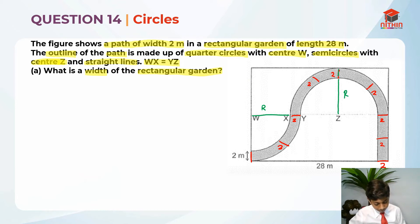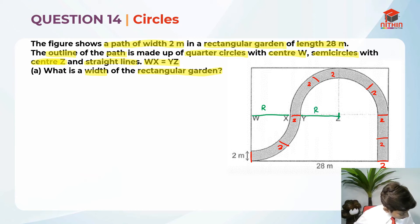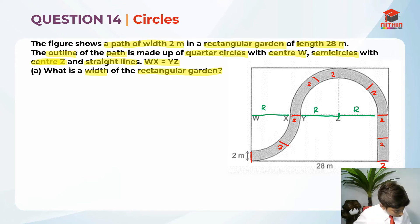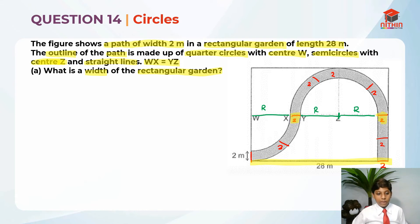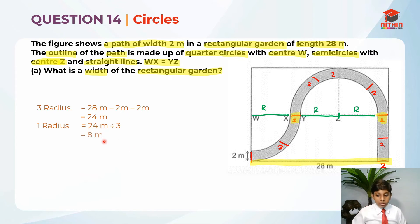Let's highlight the radii in the line. There's a radius there, a radius here, and another radius here — so there are three radii. We know that the length is 28 meters, and over here there is 2 meters on each end. So basically, we can find three radii by taking 28 meters minus 2 meters minus 2 meters. Three radii equals 28 minus 2 minus 2, which is 24 meters. So just like with units, we find one of them: one radius equals 24 meters divided by 3, which equals 8 meters.